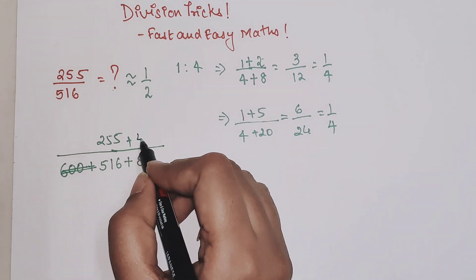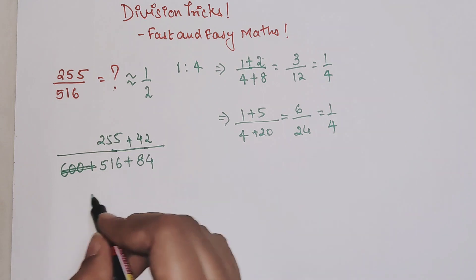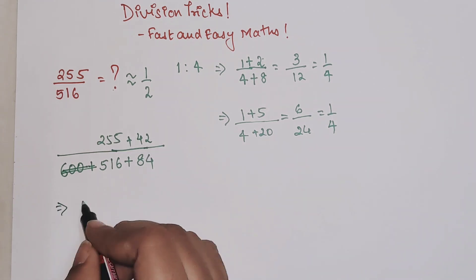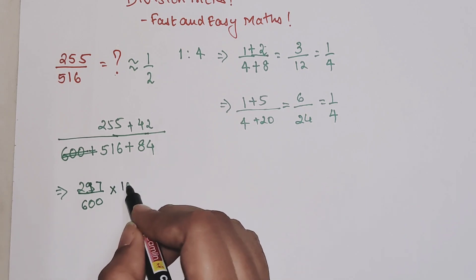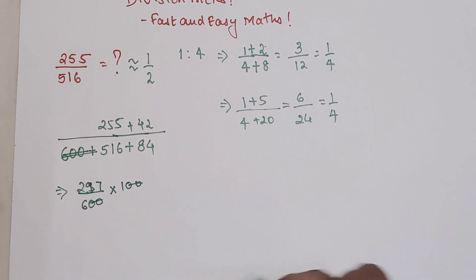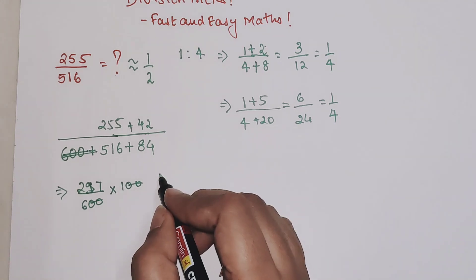So now this is coming out to be 297/600. If this was a percentage involved, your entire problem would have been solved, but even if there was not a percentage involved, you just have to do this.